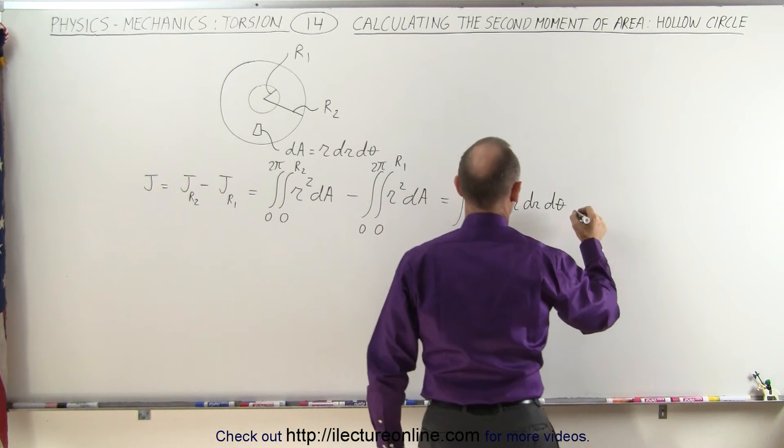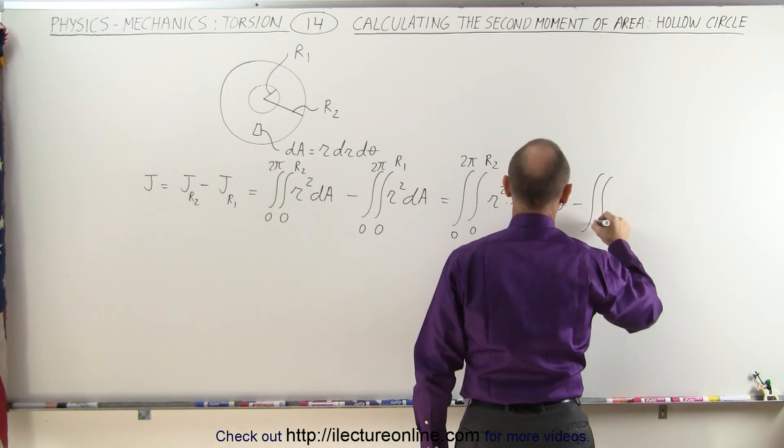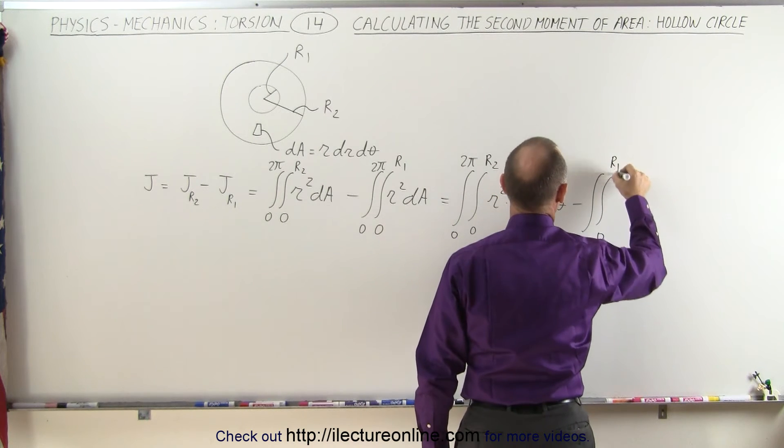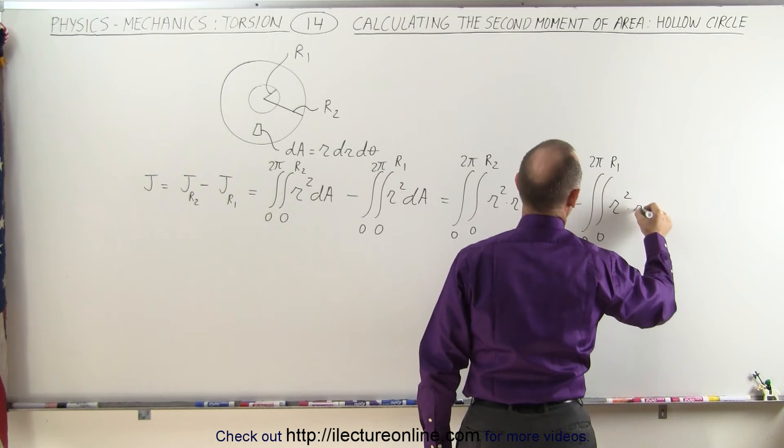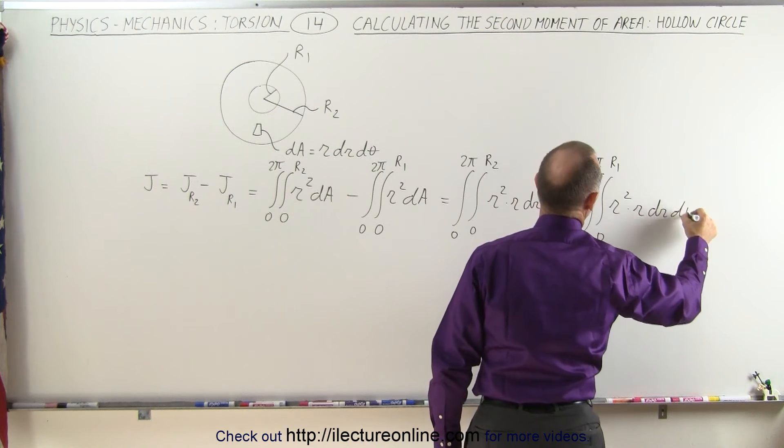and then minus the double integral from 0 to R1 and from 0 to 2 pi of R squared times R times dr d theta.